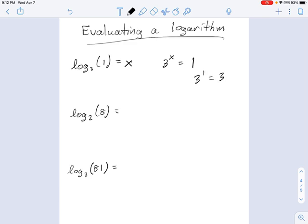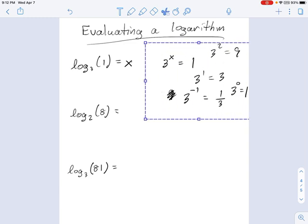3 to the 1 equals 3, that's not it. 3 squared equals 9, no good. 3 to the negative 1, remember what that is from exponents? That's 1 third. The only thing that works is 3 to the 0, which is equal to 1. This is one of the properties of exponents. And because it's a property of exponents, it turns into a property of logarithms.